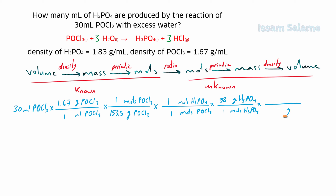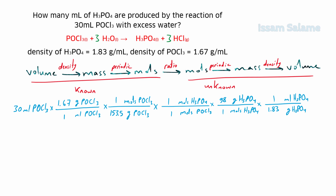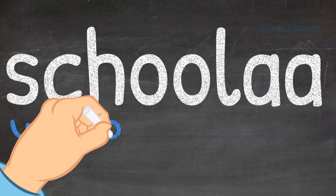We multiply by another fraction to convert grams of H3PO4 to volume: grams of H3PO4 goes in the denominator and milliliters of H3PO4 in the numerator. From the density of H3PO4, we put 1.83 next to grams and 1 next to milliliters. We cancel similar units, multiply all numerators, divide by denominators, and the answer is 17.48 milliliters of H3PO4.